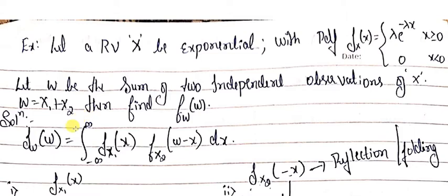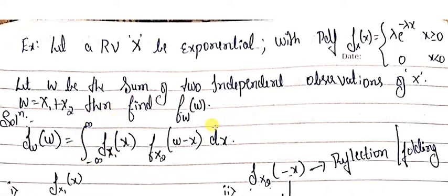The operations involved in convolution are: first, one pdf is kept fixed while the other is folded or reflected. Then, with w minus x, the folded version is getting shifted by w units. The common overlap region is then obtained and evaluated over the limits of integration.